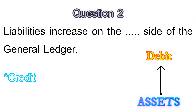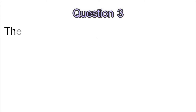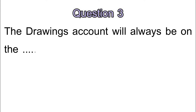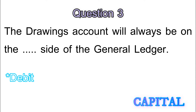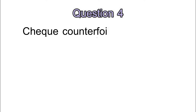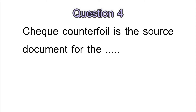Question 3: the drawings account will always be on which side of the general ledger? The drawings account will always be on the debit side of the general ledger, because the owners of the business are taking money out of the business. Just as the capital account would always be on the credit side of the general ledger, because the owners of the business are putting money into the business.